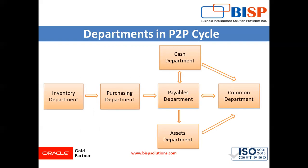The procure to pay process is how an organization procures the goods and services it needs to do business. Procure to pay is the process of requisitioning, purchasing, receiving, and paying for and accounting for goods and services, covering the entire process from the point of ordering through to the payment. We will cover this P2P cycle step by step.